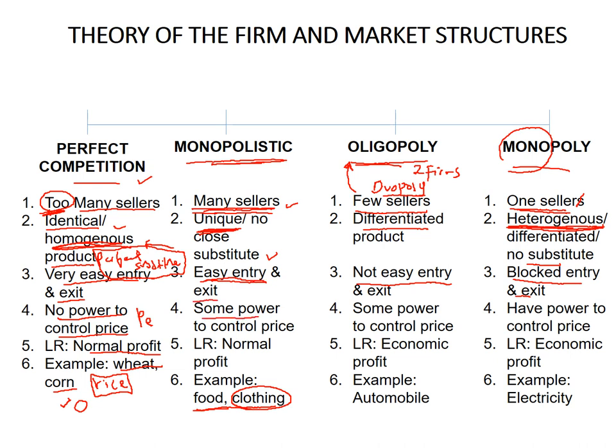In monopolistic competition, the firm has some power to control the price. Maybe your price is a bit more expensive than competitors, but people still buy from you because of beautiful packaging or a good smell. That is why you have some power to control the price — if you notice in a supermarket, the prices of shampoo are not too far from each other. The profit in monopolistic competition is normal profit, similar to perfect competition, because there are many sellers and many competitors.